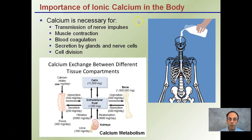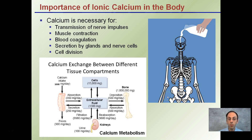Calcium is necessary for many things: transmission of nerve impulses, muscle contraction, blood coagulation, secretion by glands and nerves, and cell division. It's very important that we maintain a distinct amount of calcium in our body for more than just bones. While bones themselves compose about 99% of the total calcium in our body, that other 1% also has very important functions.